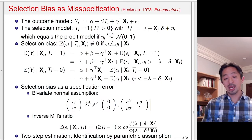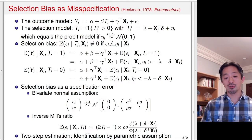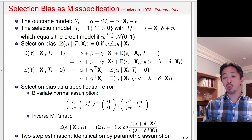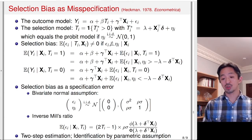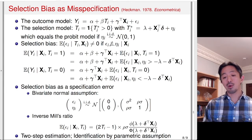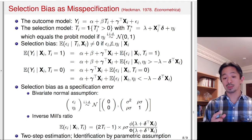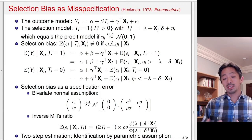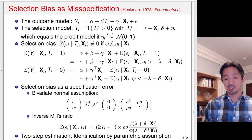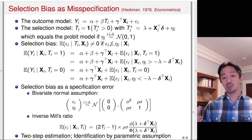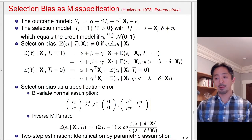The coefficient on the inverse Mills ratio term will be ρσ. Since we can estimate σ² from the variance of the residuals, we can back out ρ, the correlation term. Notice that when ρ = 0 — when the two error terms are uncorrelated — this term is zero, so there is no omitted variable to worry about.